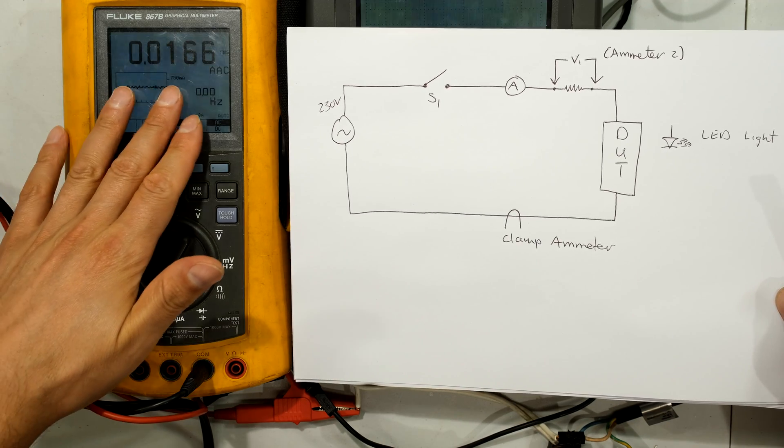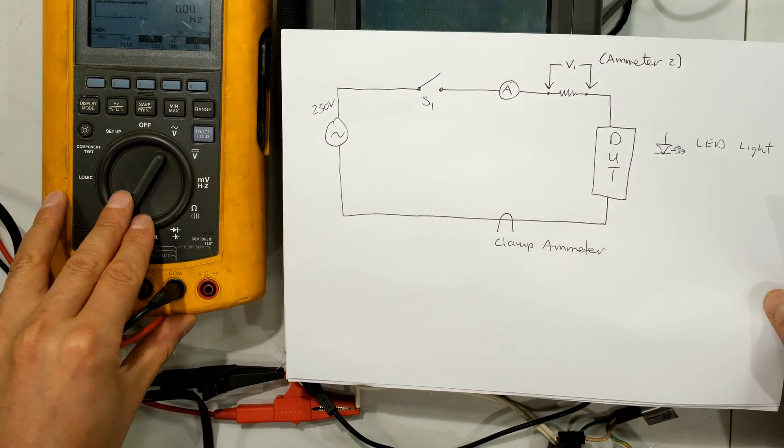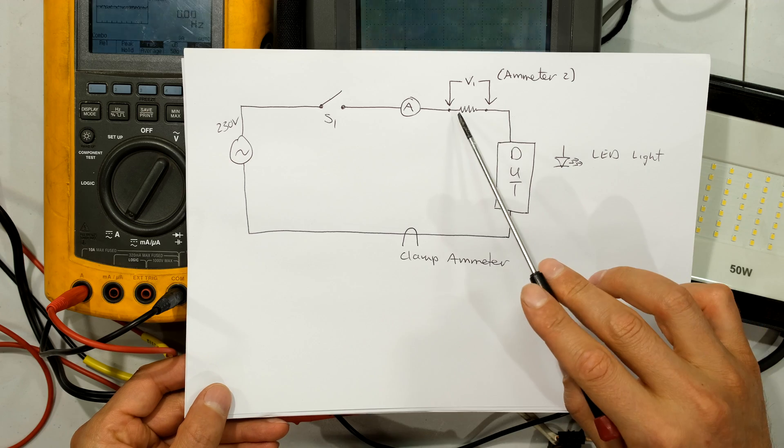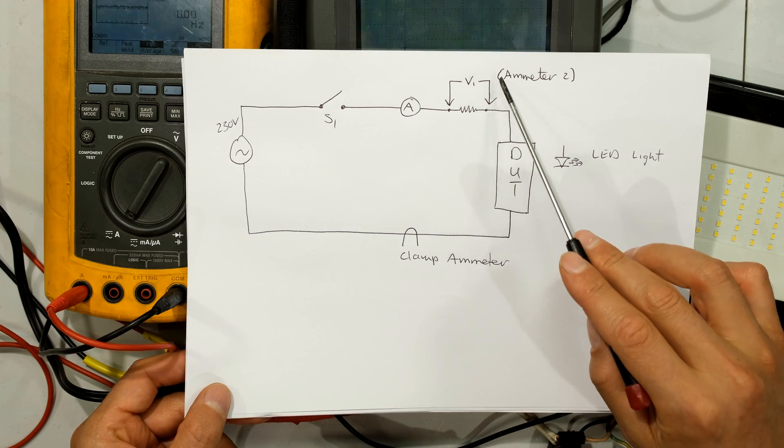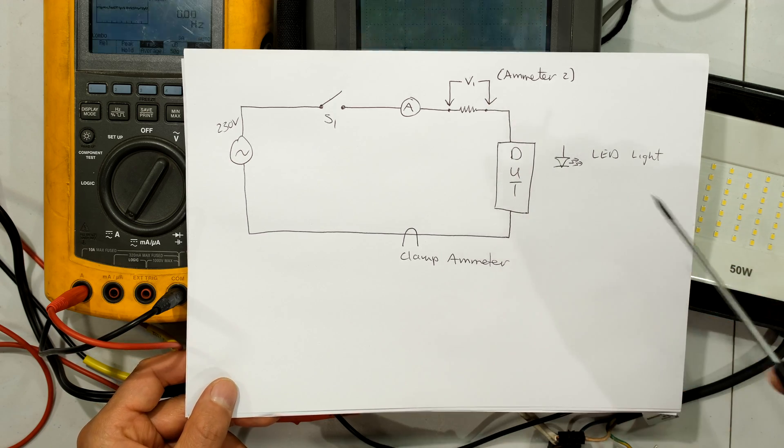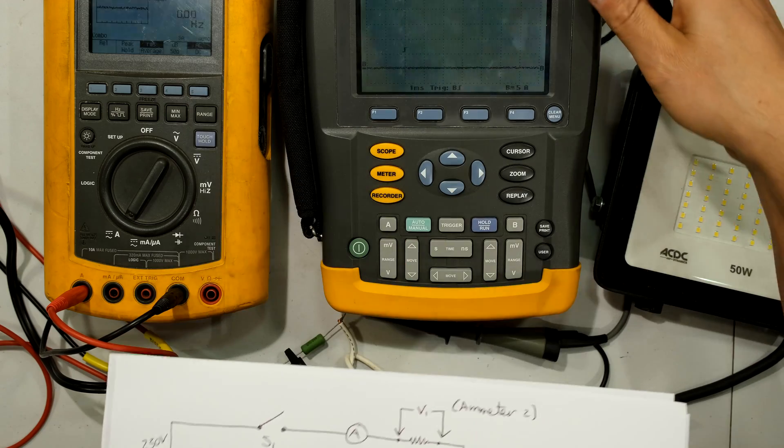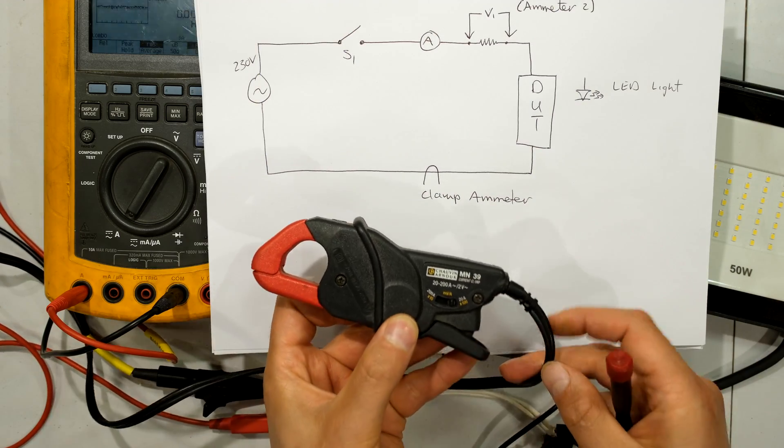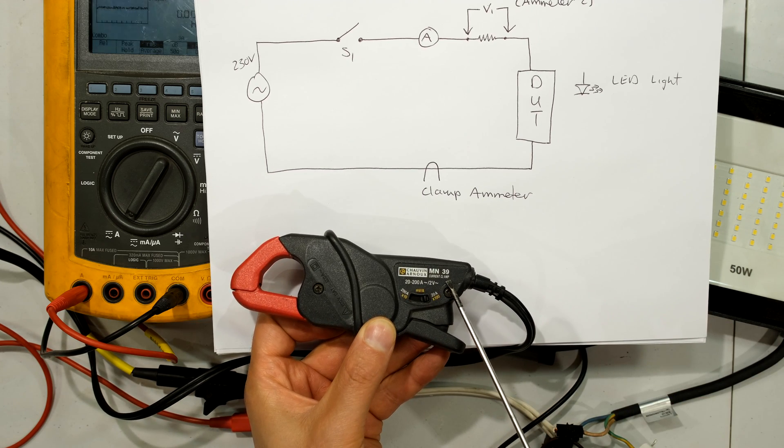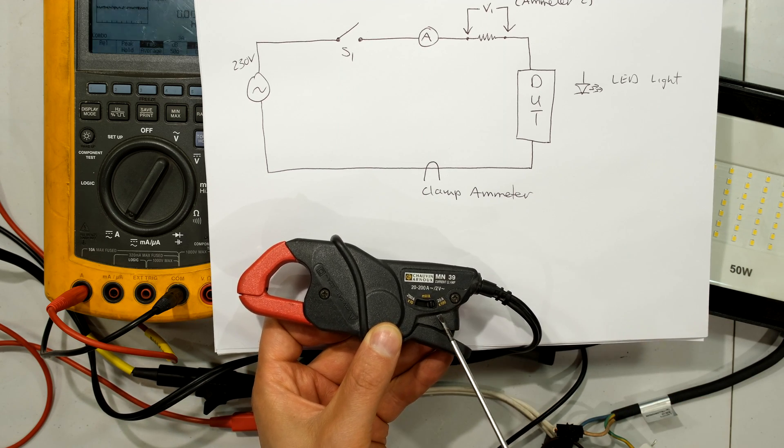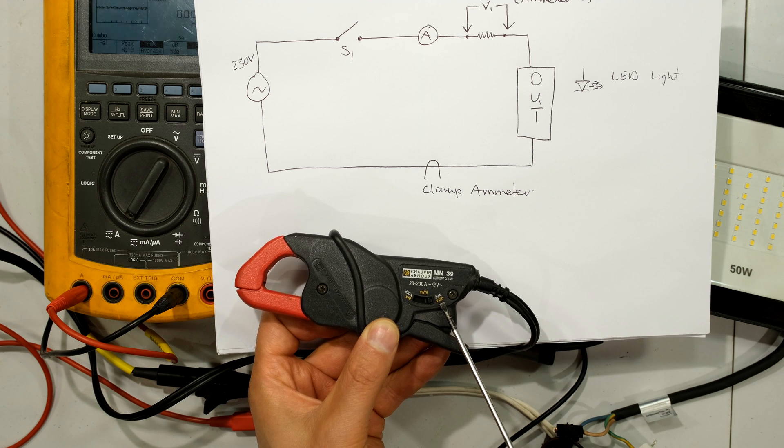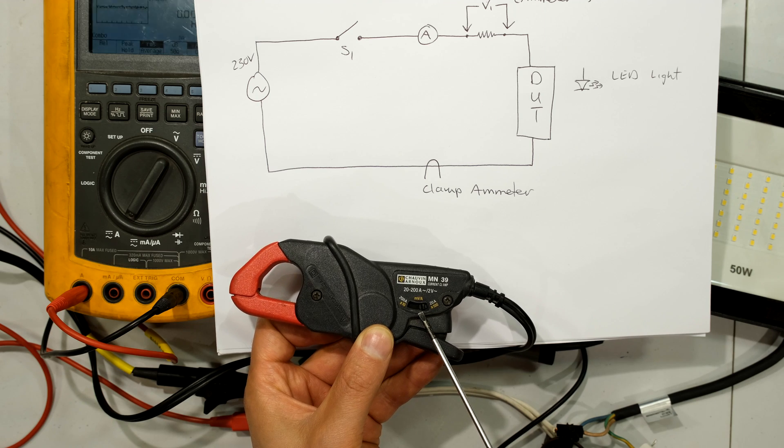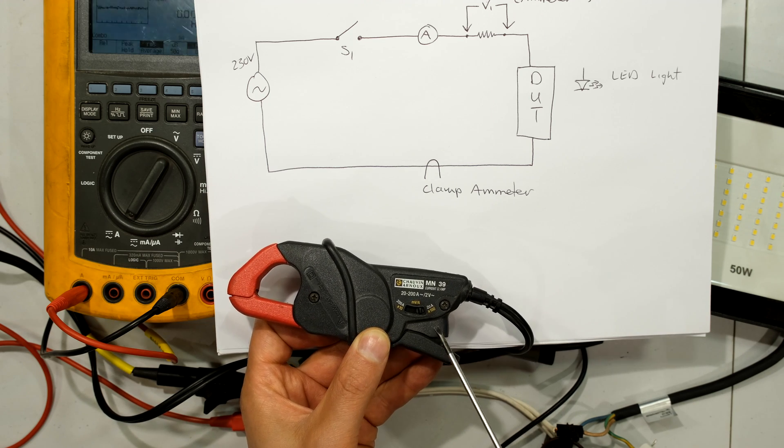I will be measuring the nominal current with the Fluke, and then I have this 1 ohm resistor which will create a volt drop which will be converted to a current measurement on channel B of the oscilloscope. Then I have this Chauvin Arnoux current clamp MN39 set to the 20 amp range on channel 1 of my scope meter.